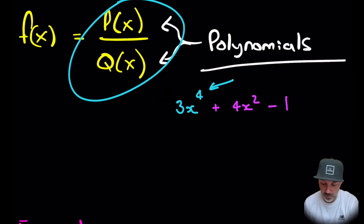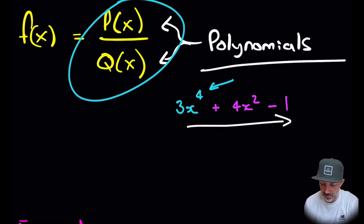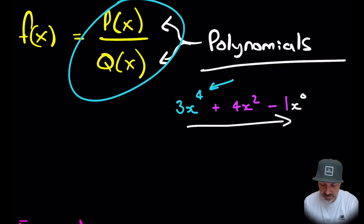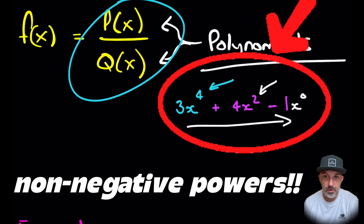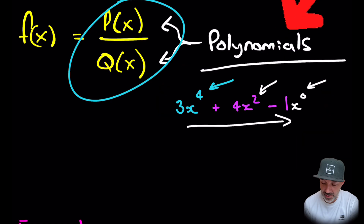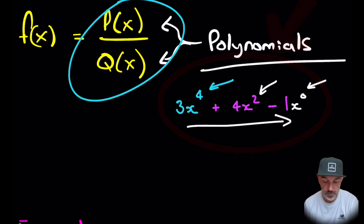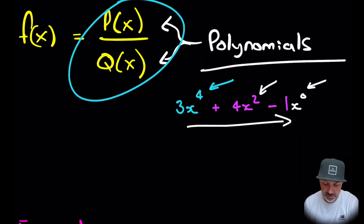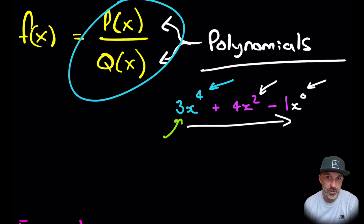A polynomial doesn't have to have all powers of x going down to zero — here we have x to the zero. We can leapfrog certain values of x, but what's most important is that all the powers of x are integers. It doesn't matter about the leading coefficient; that can be positive or negative. This is an example of a polynomial.